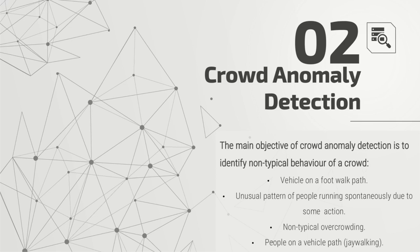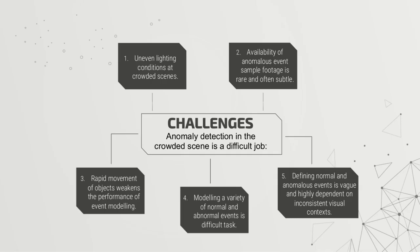The main objective of crowd anomaly detection is to identify non-typical behavior of a crowd, such as vehicles on a footwalk path, unusual patterns of people running spontaneously, non-typical overcrowding, or people jaywalking on vehicle paths. Anomaly detection in crowded scenes is a difficult task. Some challenges include uneven lighting conditions, the rarity of anomalous event datasets, rapid movements of objects that weaken event modeling performance, and the difficulty of defining normal and abnormal events, which is vague and dependent on inconsistent visual contexts.